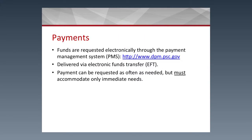Now let's talk about payments. Once you've received and agreed to the award, you want to draw down funds. All funds are requested electronically through the Payment Management System, or PMS. There are no checks or wire transfers — it's fully electronic. The funds are delivered via electronic transfer and are automatically deposited from the Payment Management System into the institution's account.